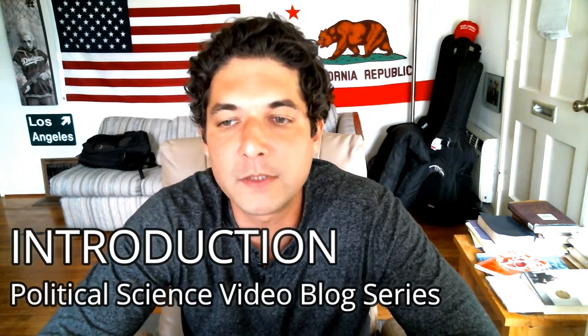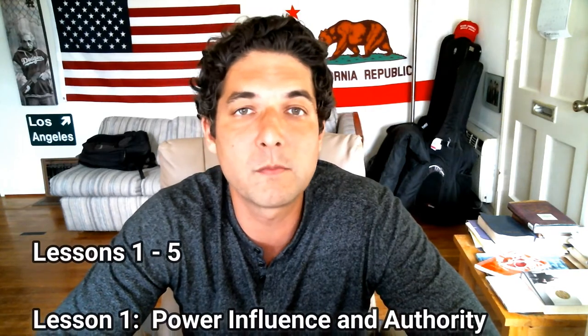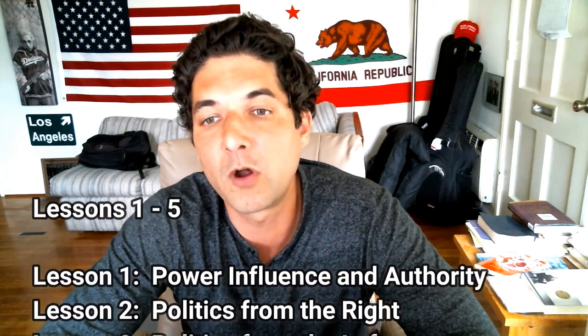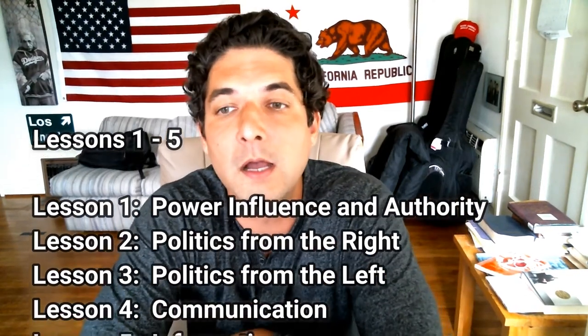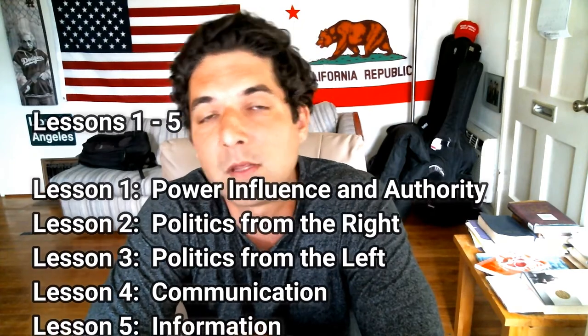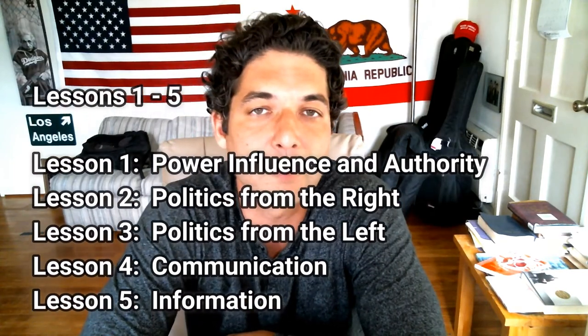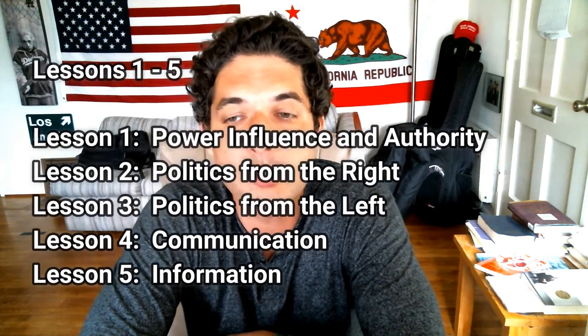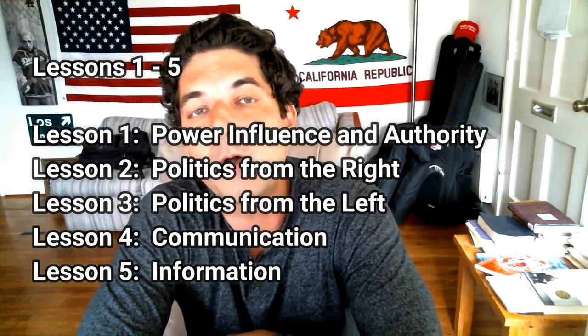Lessons one through five in this video blog series are the core concepts I developed as a foundation of political science in general. Lesson one is about power, influence, and authority, and discusses the difference between informal and formal rules, laws, and constructs. Video two is about politics from the right, video three is about politics from the left, video four is about communication, and video five is about information.